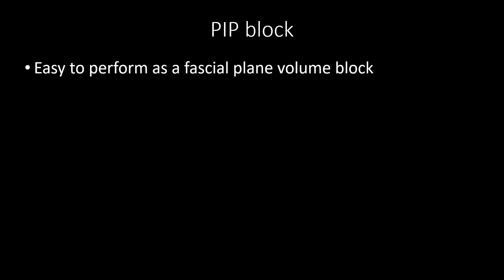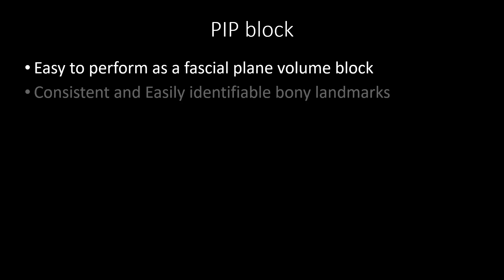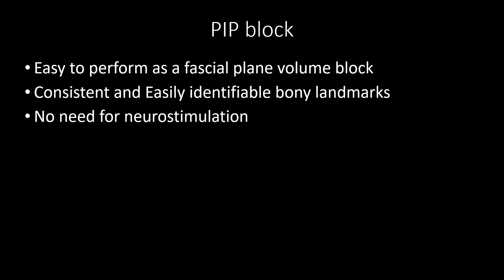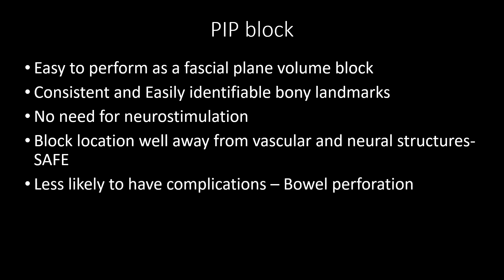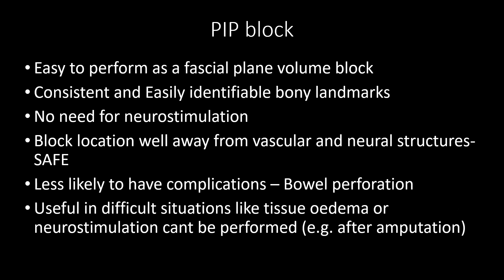The advantages of the parasacral ischial plane block are: it is an easy-to-perform fascial plane block using large volumes; the bony landmarks are reliable and consistent; the relationship of the sacral plexus to the posterior border of the ischium is also consistent; there is no need for neurostimulation; the vascular and bowel structures are well away, reducing complication risk; and it is useful when neurostimulation is not possible, such as after muscle relaxants or in patients with amputation.